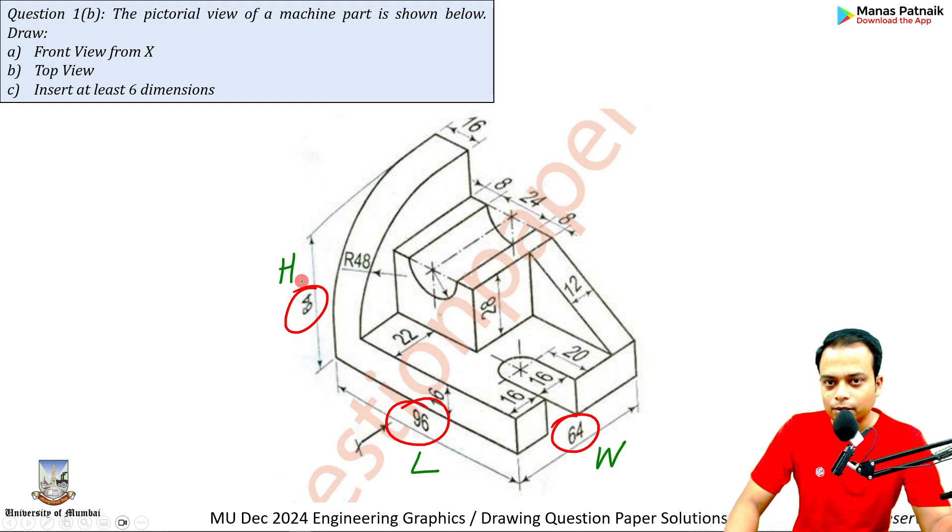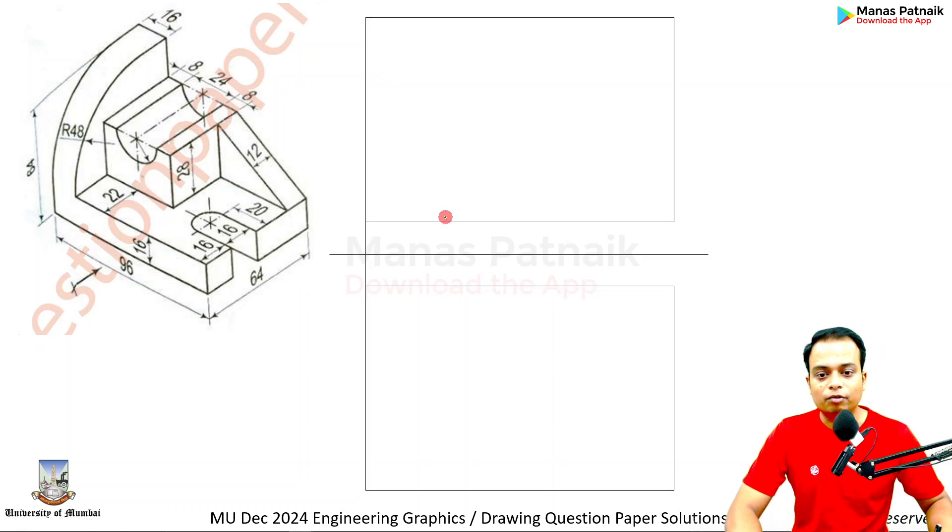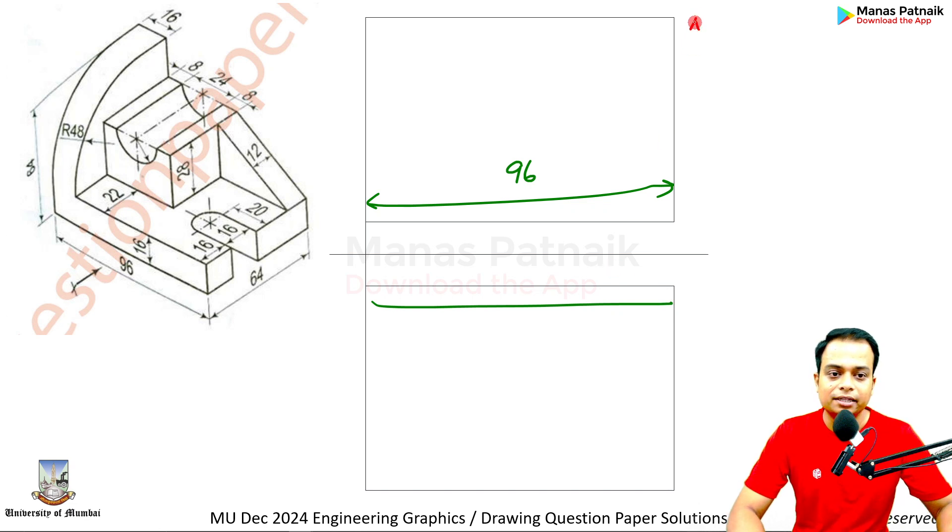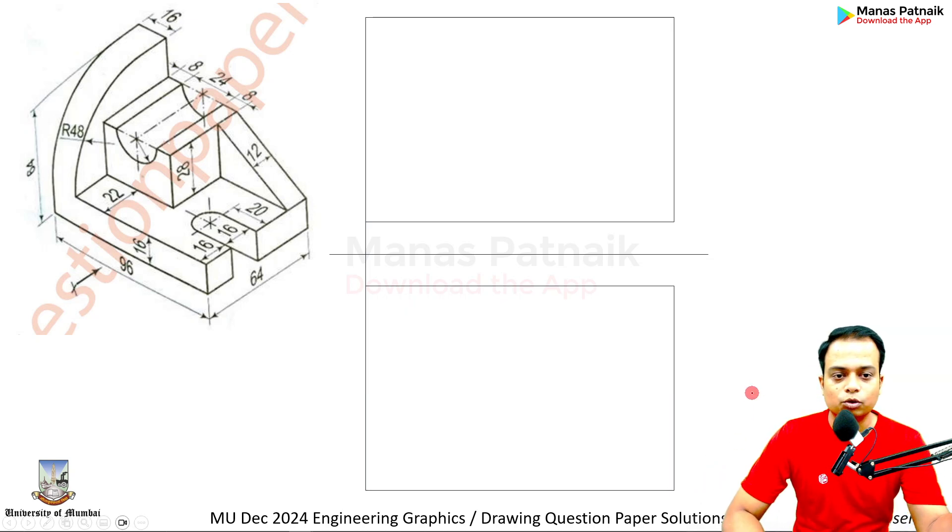We are going to create two boxes: one for the front view. You know very well this is 96, that's 96. Then secondly, the height you know is 64. The width, which can be seen in the top view, is again 64. So far so good, no issues.